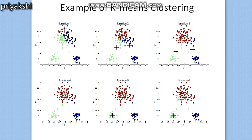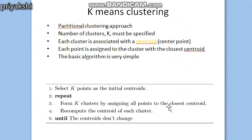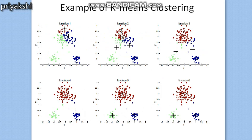We repeat the step of forming k clusters by assigning all points to the closest centroid. In the next iteration, the shape of the first cluster changes, the second cluster gains some new members, and the third cluster loses some members to the first cluster. After this third iteration, the centroid shifts again to the mean of all data points in each cluster, moving to the new center positions.